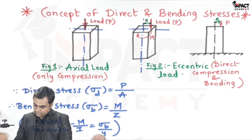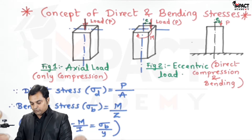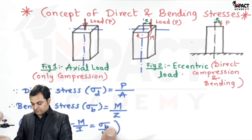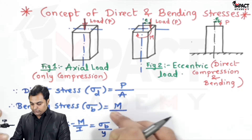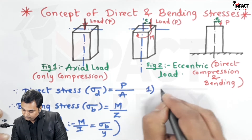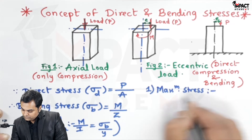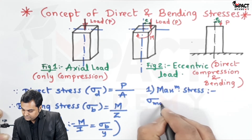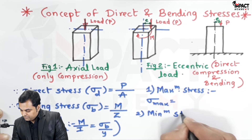When y is multiplied with M and goes into the denominator of I, then I upon y is called Z. So the final formula of bending stress is M upon Z. Whenever the load is eccentric we get both these stresses, and at the same time there would be a maximum stress denoted by sigma_max.